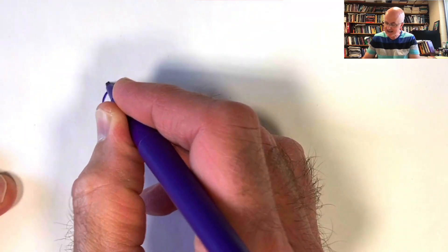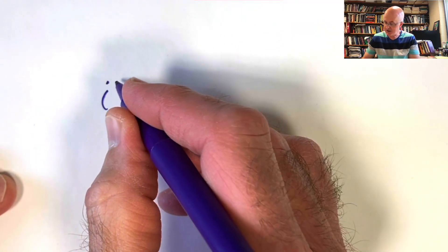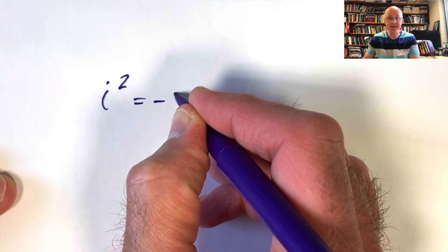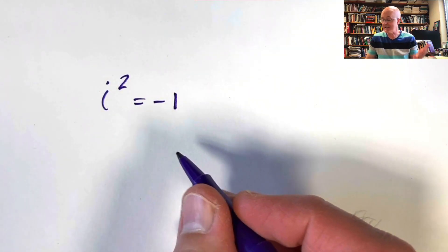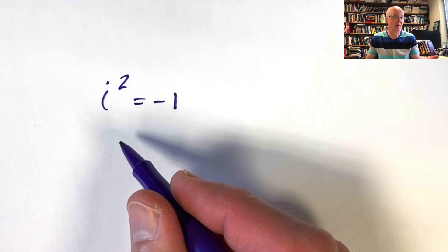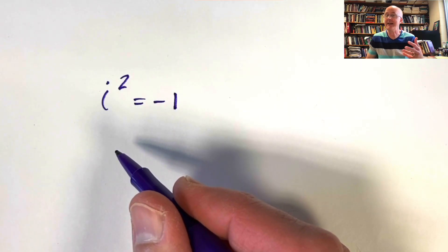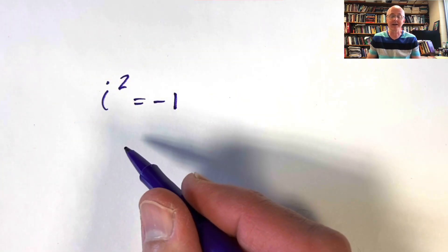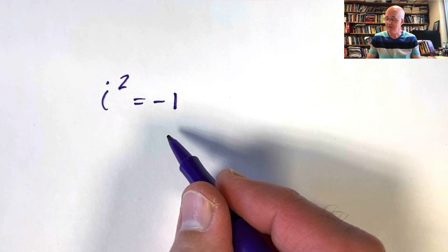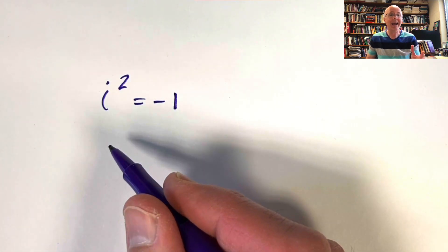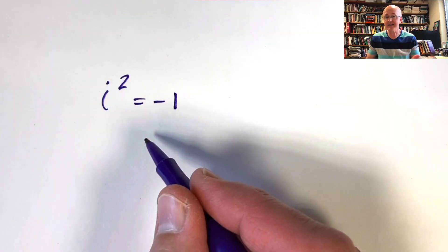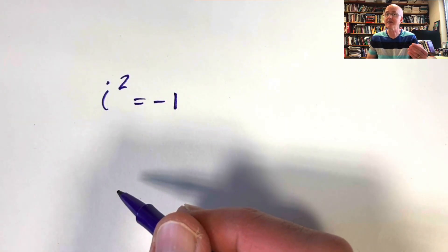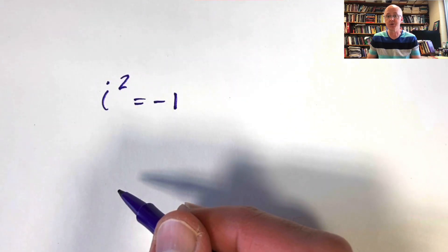The imaginary unit i is defined by the condition that i squared equals negative one. The first question I typically get from students is: how do I know such a number exists? After all, if I take any ordinary real number and square it, I don't get a negative number. My answer is that we define it to exist. We define i by this condition, and we also generalize to complex numbers, and we define what it means to add, subtract, multiply, and divide them.